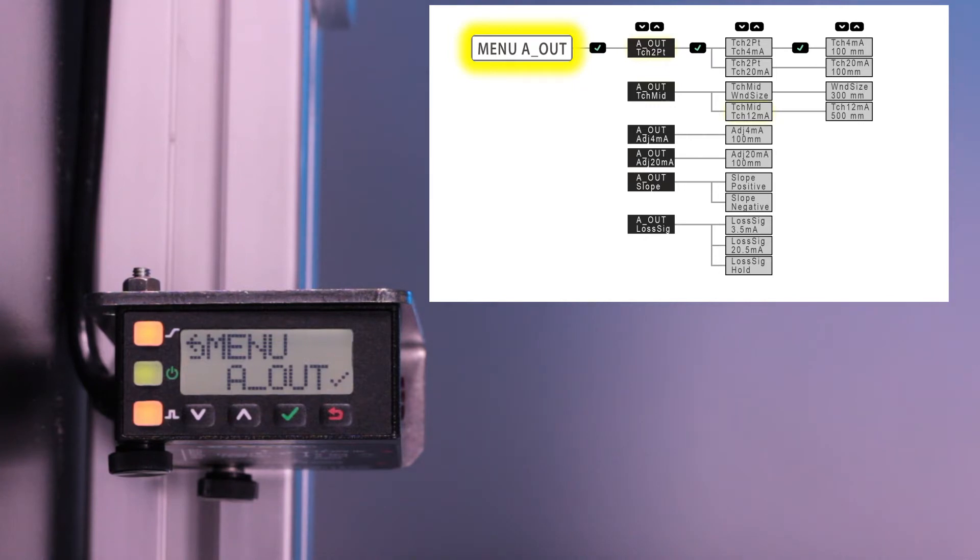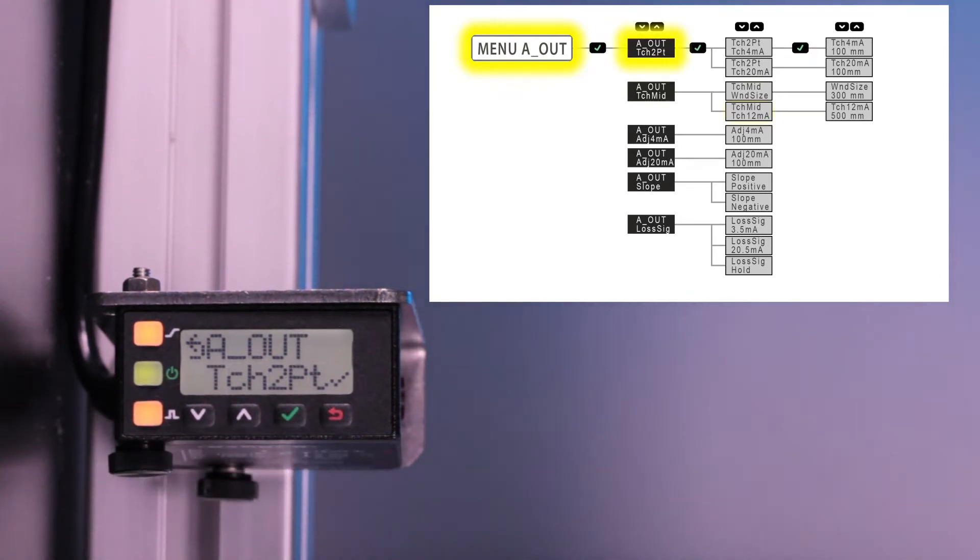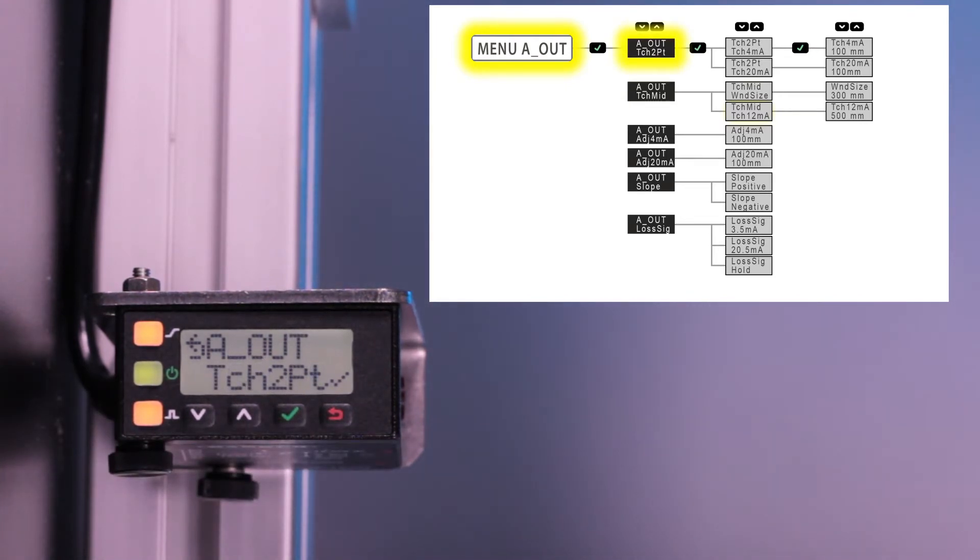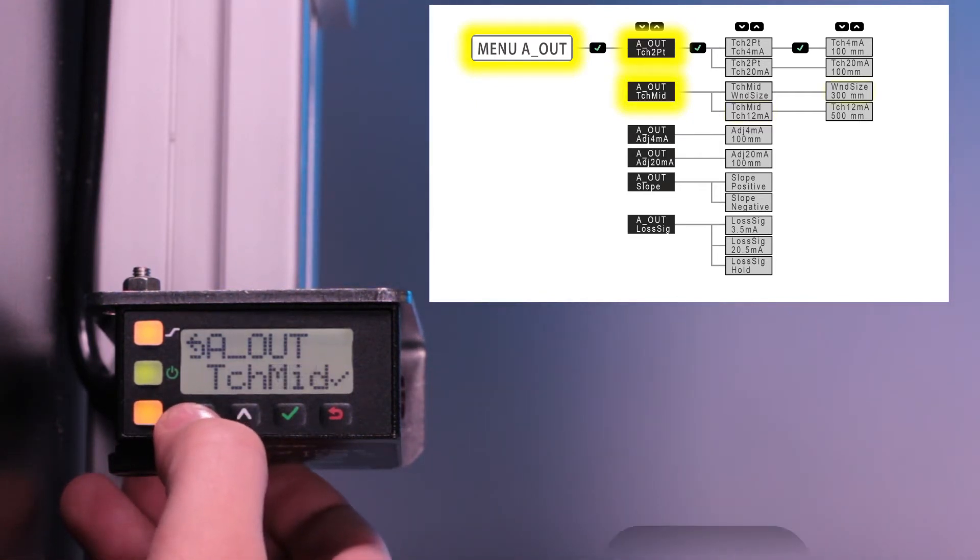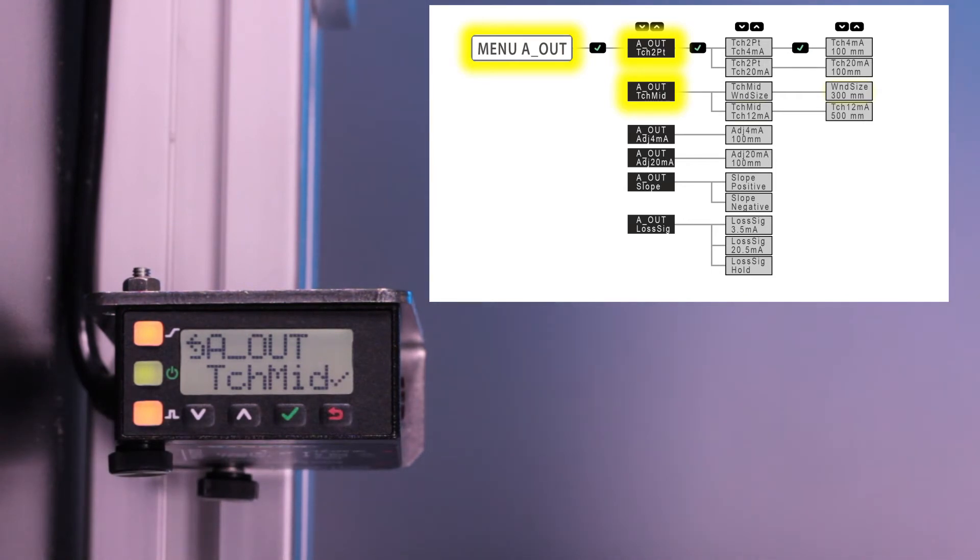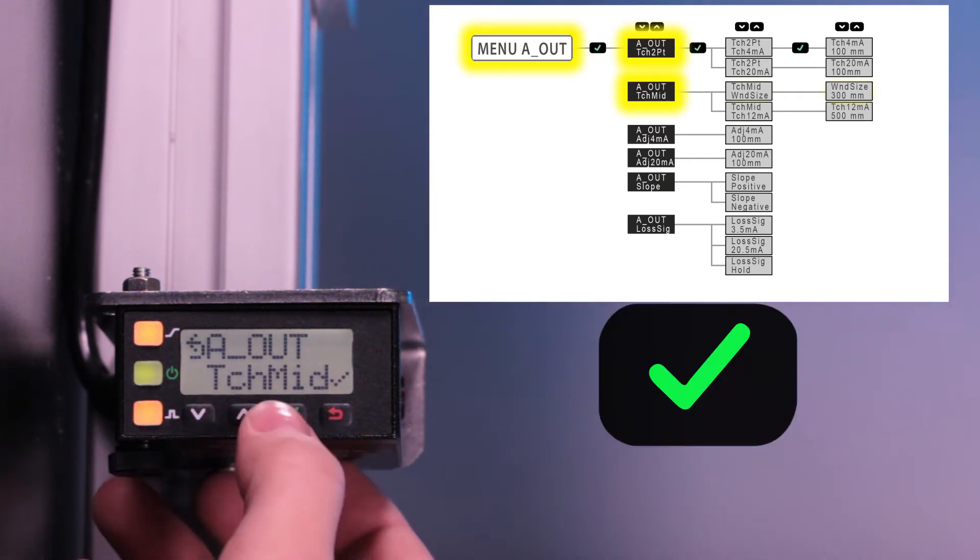The first option within the sensor menu is Aout, the analog output. Click enter to view the analog output submenu options. First is 2-point static teach. From here, click down to access other options. Here is teach mid. Click enter to choose this midpoint teach option.